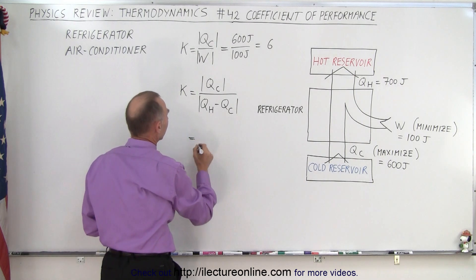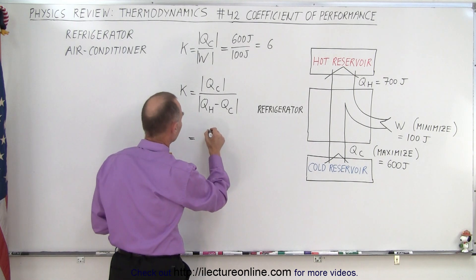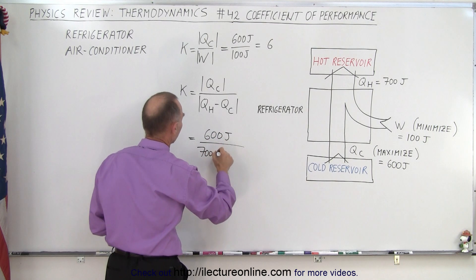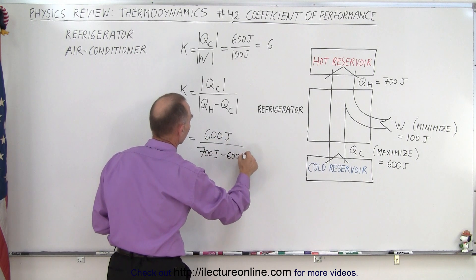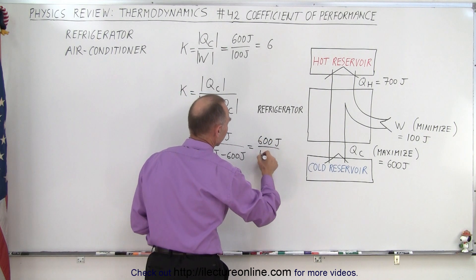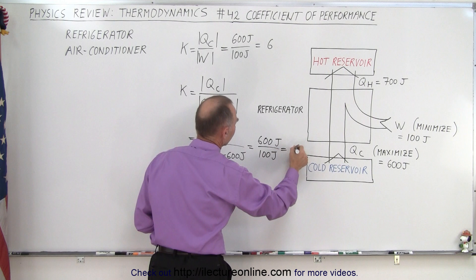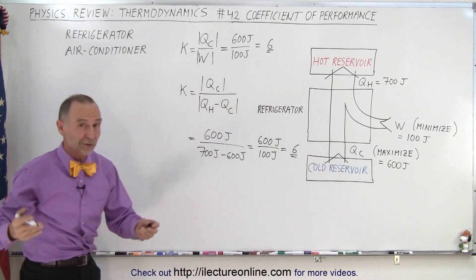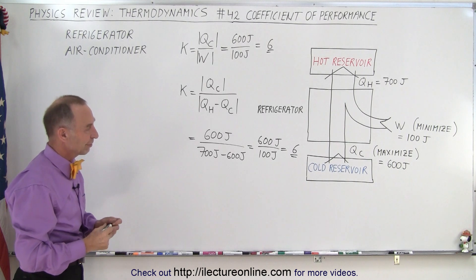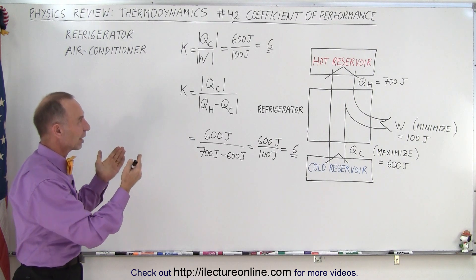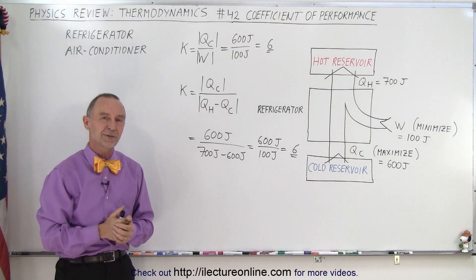Or if you want to calculate it like this, this is equal to Q cold which is 600 joules divided by 700 joules minus 600 joules, which again gives you 600 joules divided by 100 joules, which is equal to 6. So obviously you get the same result with both equations because they're essentially the same equation in a different form. So that is what we mean by the coefficient of performance and this is how you calculate the coefficient of performance.